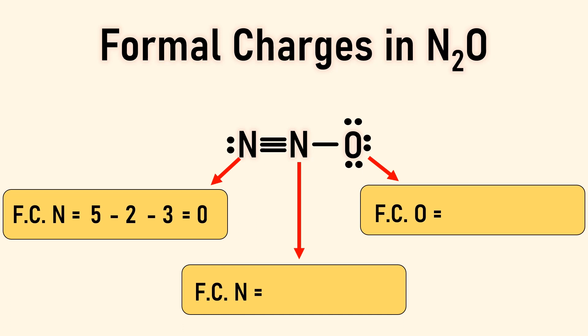Next, for the middle nitrogen, we'll start with five valence electrons, then subtract zero. This nitrogen has zero non-bonding electrons. Then I'll subtract four shared electrons in the covalent bonds. This gives a formal charge of plus one.